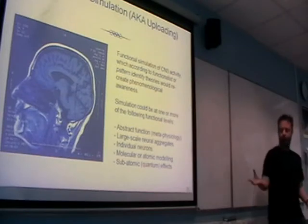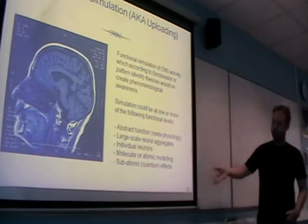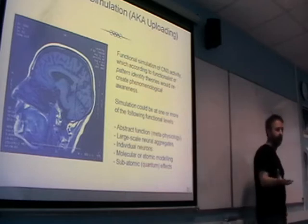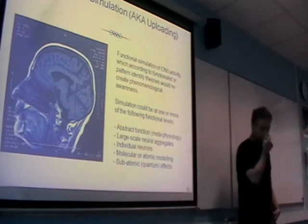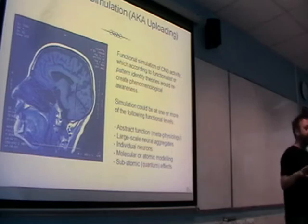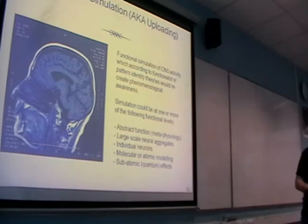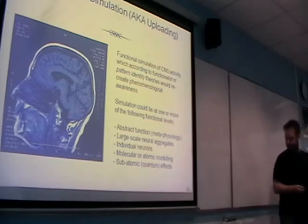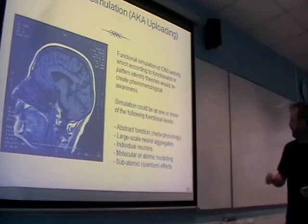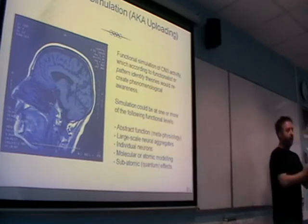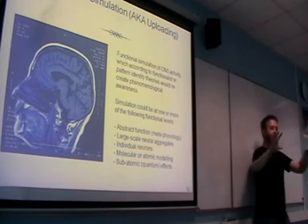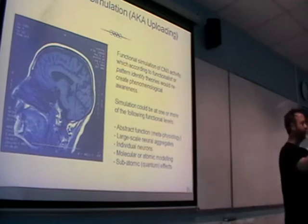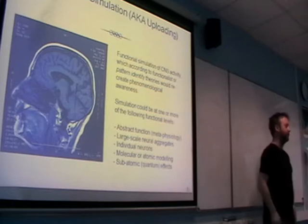A range of possible things you might be modelling - what are you modelling if you're going to recreate a conscious mind on a computer? Some people would say that basically as long as you've got the abstract function of what your brain is doing being replicated, then that's enough. So at a high level, if you've got states A and B that feed into state C, it doesn't matter if you model A and B as long as you can accurately model state C and the way it changes.